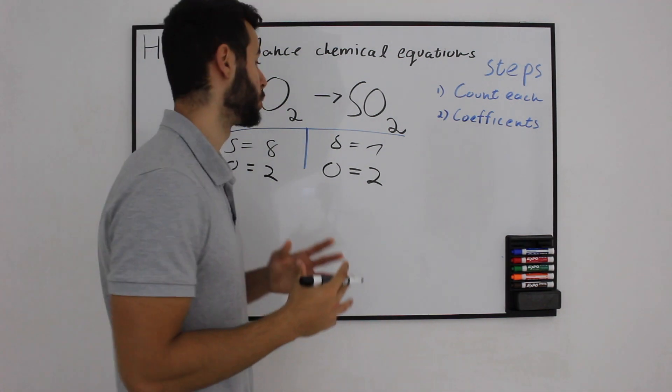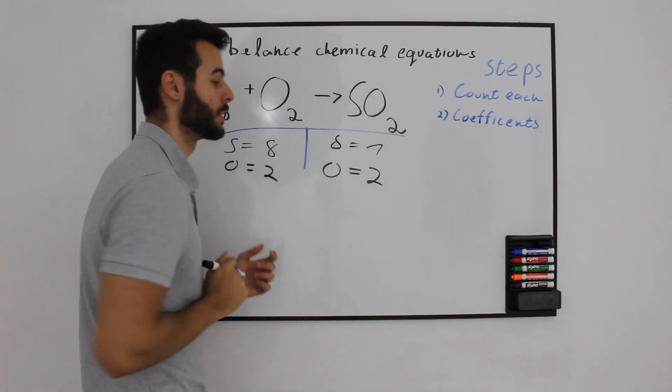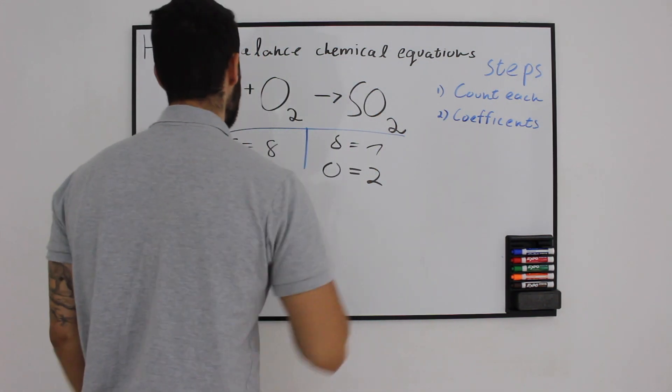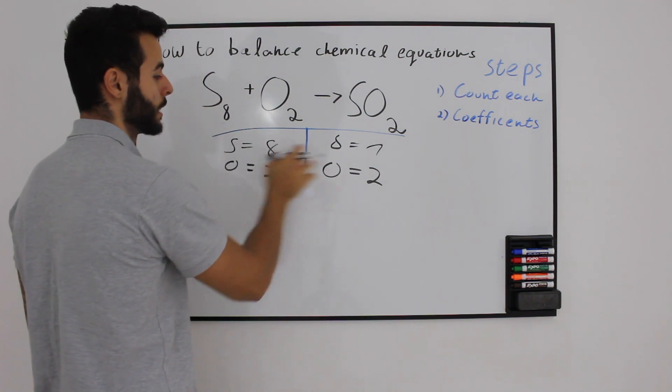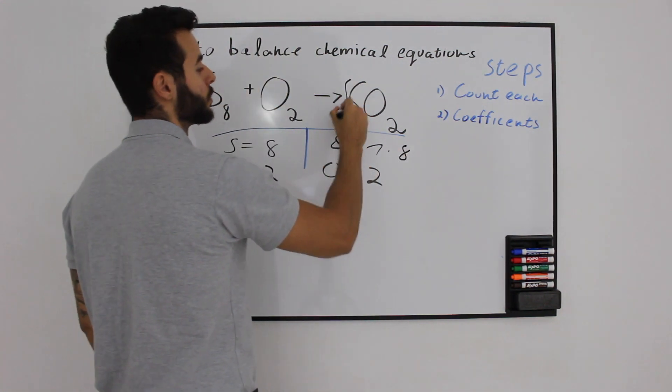Using the trial and error method, you should pick one of those and balance the other side. And then pick one of those and balance this side. If we have S8, we have sulfur 8 times and this one has 1 time. So times 8 means the coefficient is going to be 8.